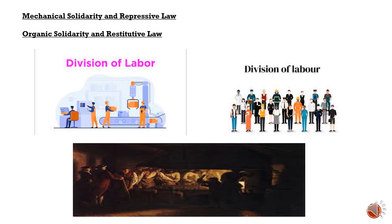Organic solidarity, on the other hand, characterizes modern industrial societies marked by diversity, specialization, and interdependence. In these societies, social cohesion arises from the mutual reliance and cooperation among individuals with diverse roles and functions. Restitutive law is the legal system associated with organic solidarity, emphasizing the restoration of social equilibrium and resolution of conflicts through restitution or compensation. For example, in a complex urban setting where individuals have varied occupations and lifestyles, legal mechanisms focus on resolving disputes through compensation rather than punitive measures.